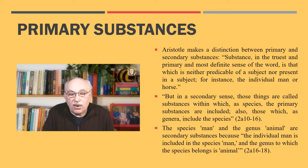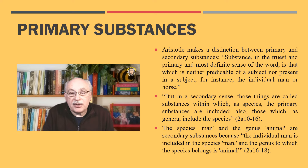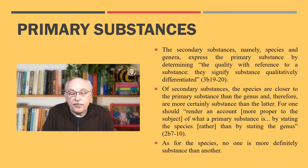In the secondary sense, Aristotle continues, those things are called substances within which, as species, the primary substances are included, also those which as genera include the species. For example, the species man and the genus animal are understood by Aristotle as secondary substances because, I quote, 'the individual man is included in the species man,' and the genus to which the species belongs is animal. Thus the primary substances belong to the fourth class of things from chapter 2, and the secondary substances belong to the first one.